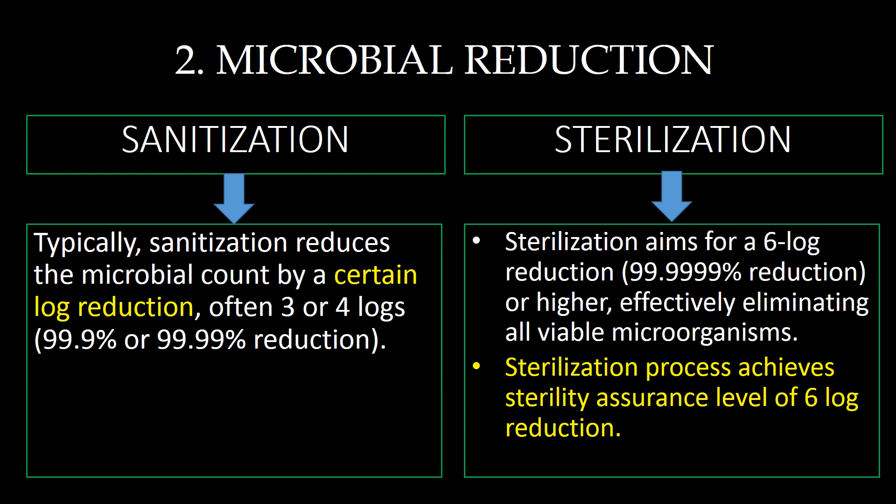In case of sanitization, sanitization reduces microbial count by a certain log reduction, often 3 to 4 log — that is 99.9% or 99.99% reduction. Whereas in case of sterilization, sterilization aims for a 6 log reduction, that is 99.9999% reduction or higher, effectively eliminating all viable microorganisms. It is important to note that sterilization achieves a sterility assurance level of 6 log reduction, which is mandatory for the sterilization process and may not be achieved during sanitization.